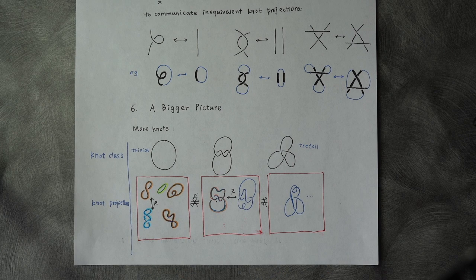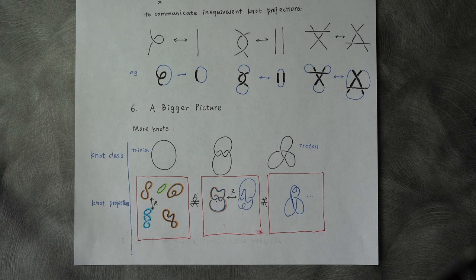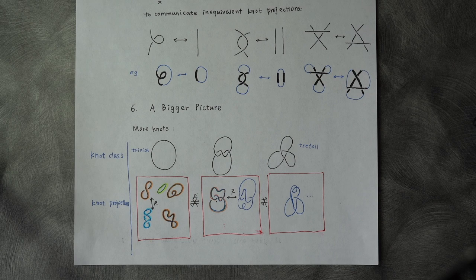Which means, if you start from a knot projection, by Reidemeister moves, you are able to reach every other knot projection class belonging to the same knot class. However,